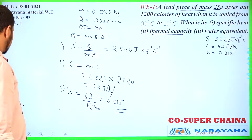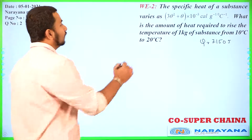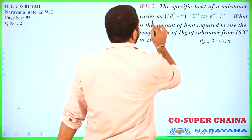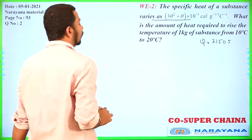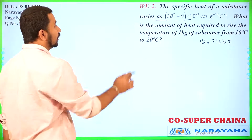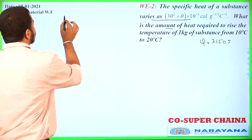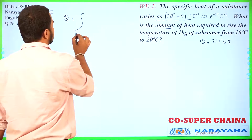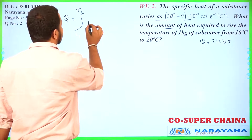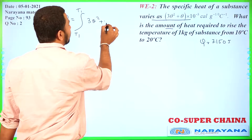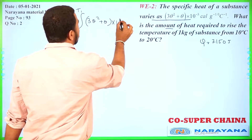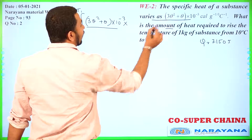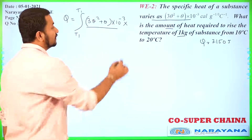Let us move to the next question. Here the specific heat capacities of the substance are given. It is a variable specific heat capacity. We need to find the amount of heat required. Since it is a variable specific heat capacity, Q will be the integral from T1 to T2 of (3θ² + θ) into 10 to the power minus 3 into m. Mass m is given as 1 kg.